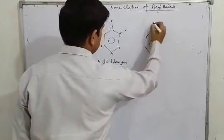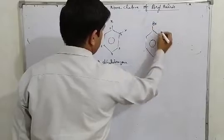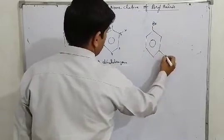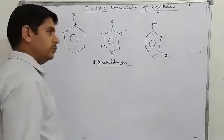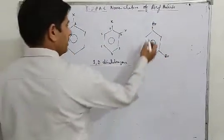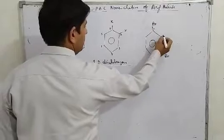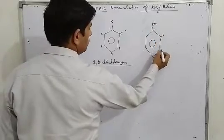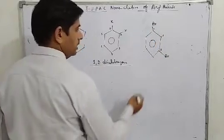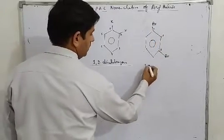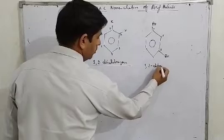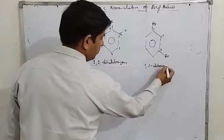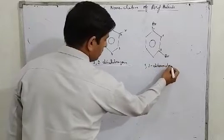For example, if we have Br here and Br here, identify the positions: 1, 2, 3 — so this is 1,3-dibromobenzene.